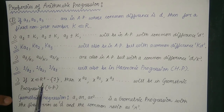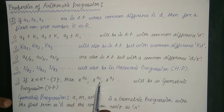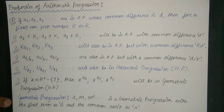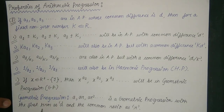If x belongs to positive real numbers except one, then the values of x to the power a1, x to the power a2, x to the power a3, till x to the power aN — where a1, a2, a3 till aN are in AP — this series will be in geometric progression. A geometric progression is of the form a, ar, ar², till ar^n, where every term is obtained by multiplying the preceding term by r. The first term is a and the common ratio is defined as a2/a1 or a3/a2, generalised as a(n+1)/an, so the common ratio is r.